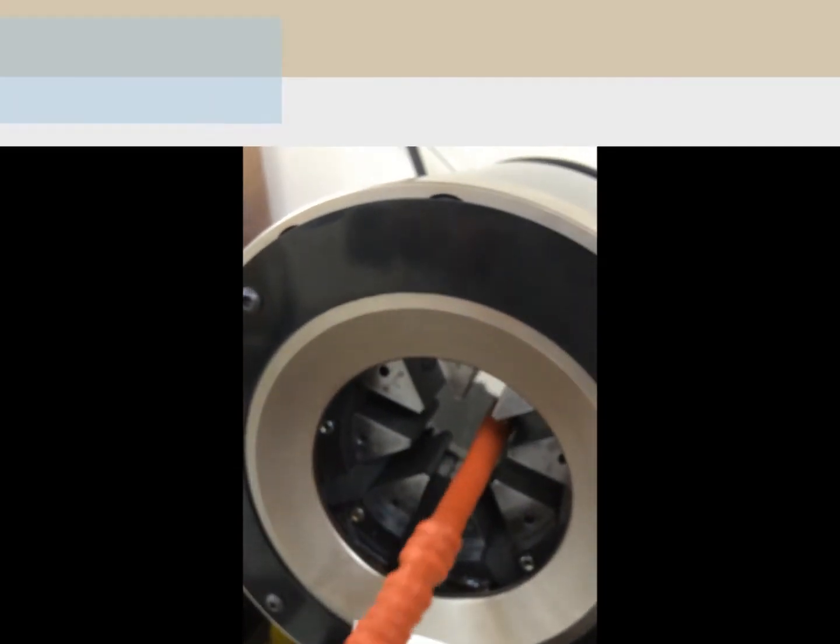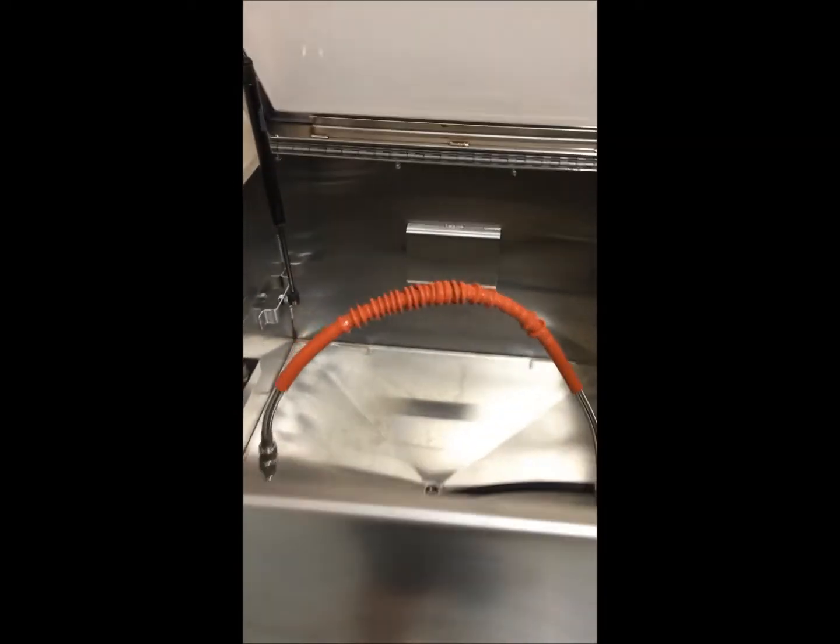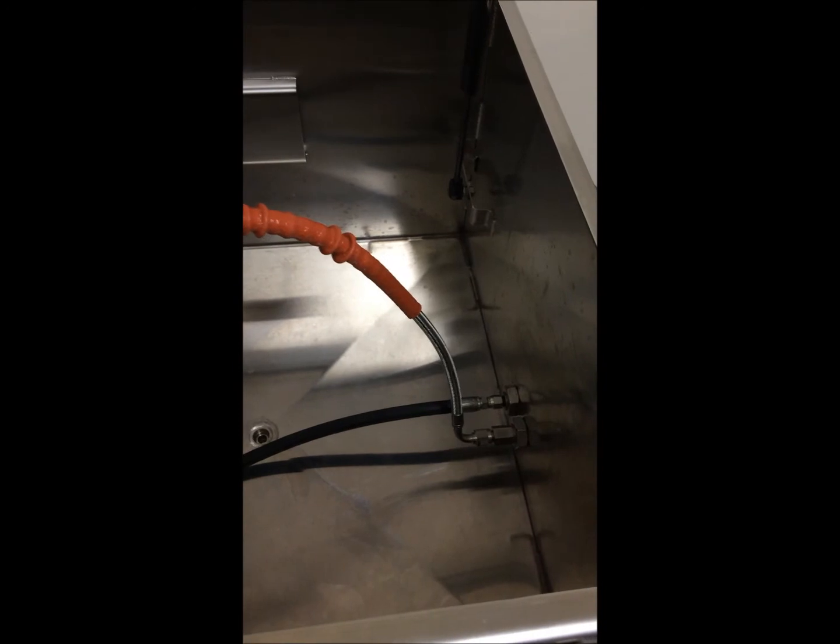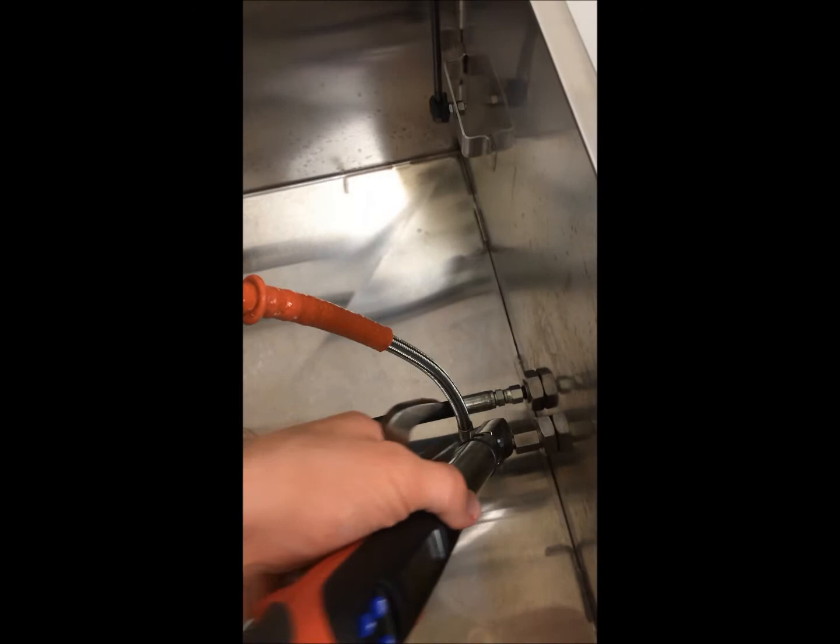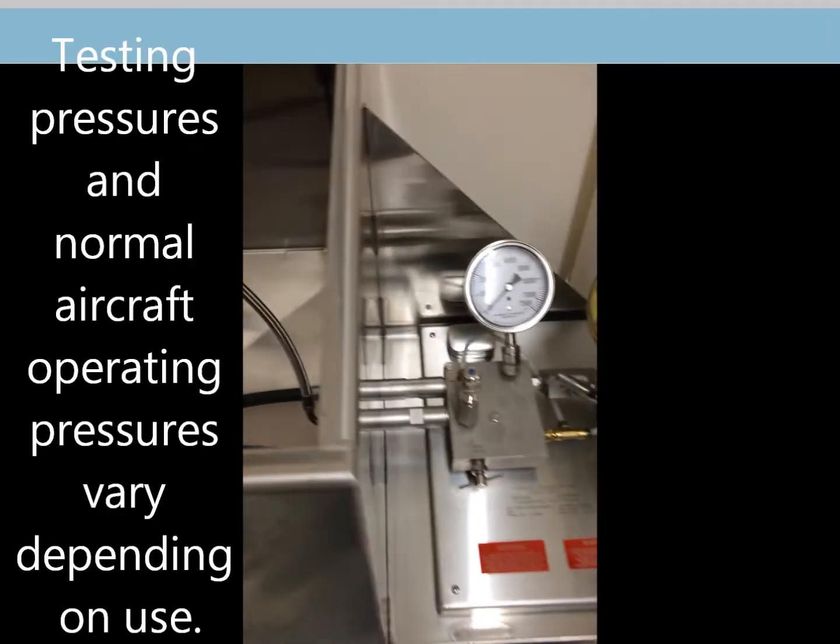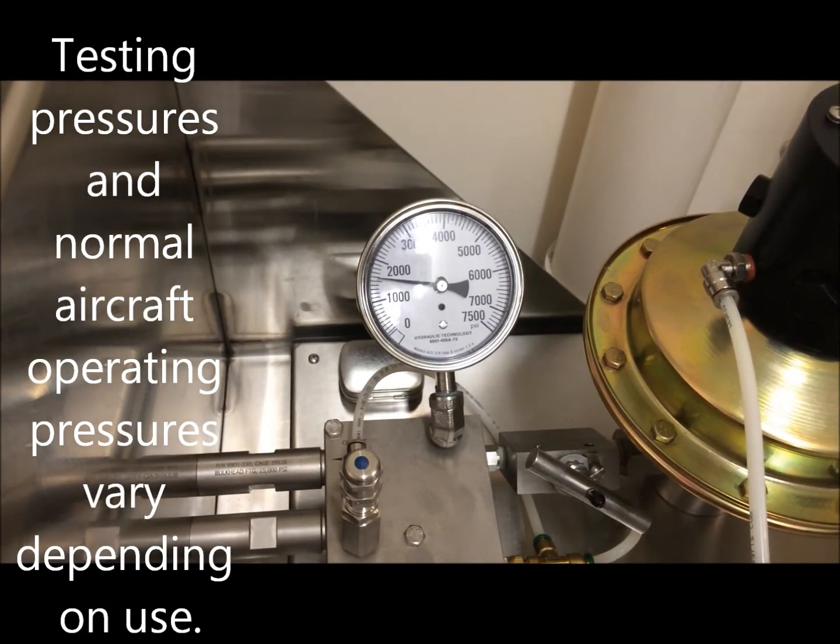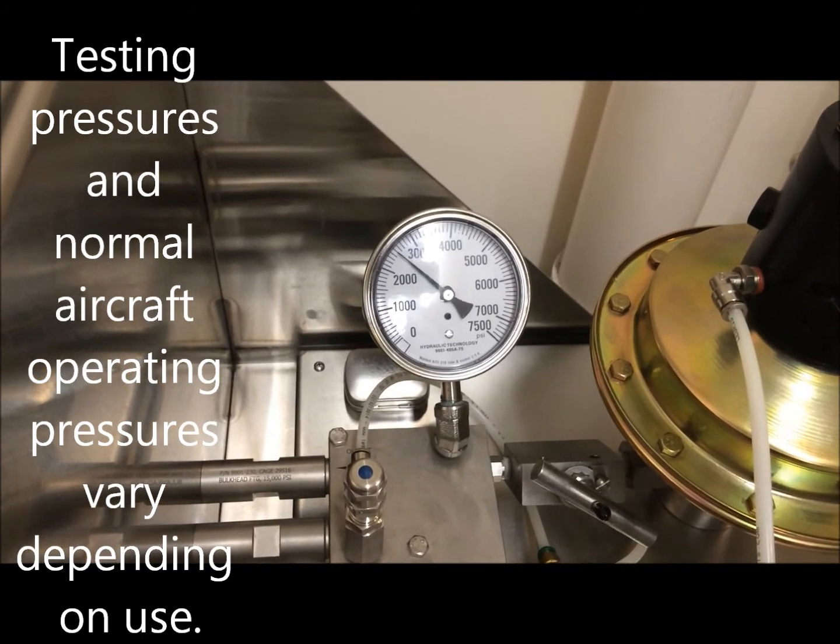Once we've completed the crimping process, we come over to our hose testing equipment. Now you'll notice that this hose testing equipment is a stainless steel box with a very thick plexiglass cover that's for operator safety. And it operates on the principle of filling your hose with water first and then introducing pressure to the hose. And what we do is, once we've pressurized the hose, we verify that there's no leaks, no water coming out of the fittings or the crimps.